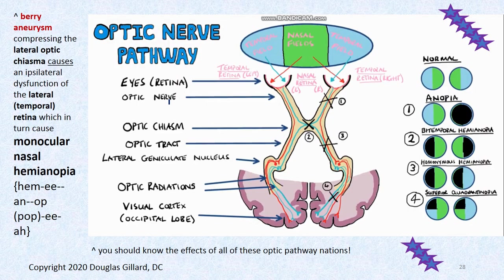This is called monocular nasal hemianopia — mono meaning one eye, nasal field, hemianopia meaning half the nasal field vision is gone. A perfectly placed internal carotid artery berry aneurysm can compress this part of the optic chiasma. The nerve supplying the temporal retina is interfered with, so you lose nasal field vision in the ipsilateral eye. Make sure you know this — I do like to ask questions on this stuff.